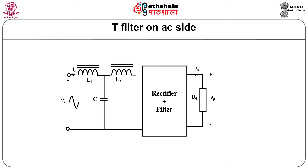One type of filter used is the T filter, which contains two inductors and one capacitor as shown in the figure.